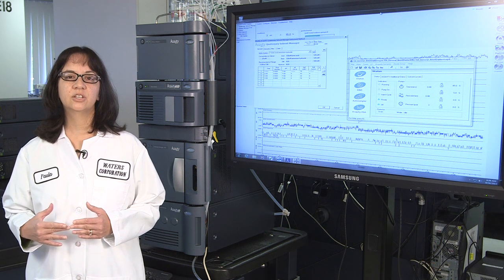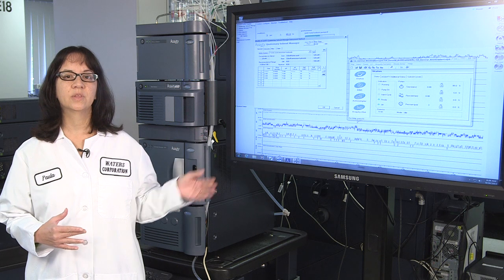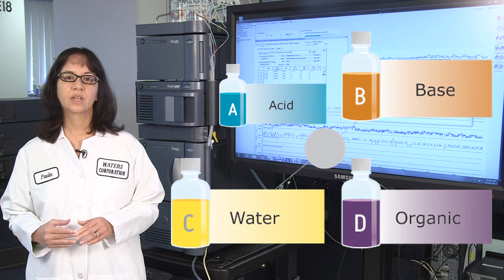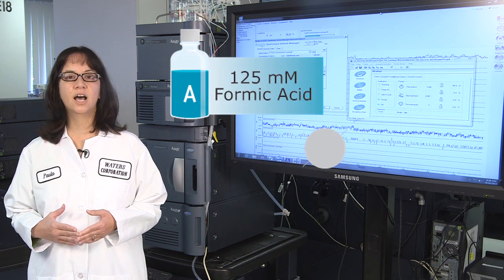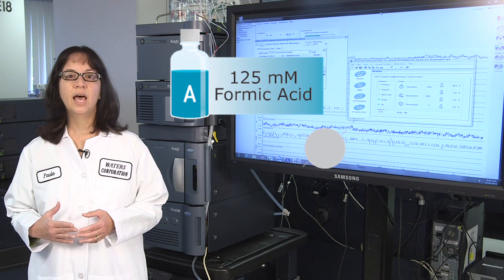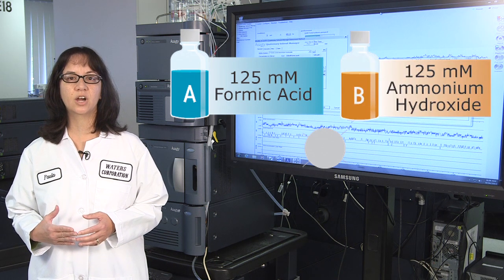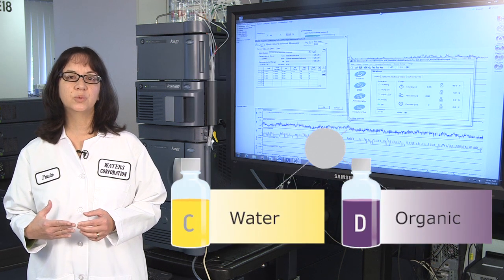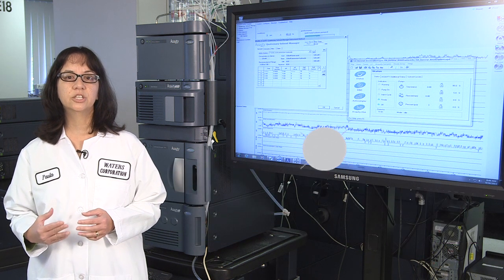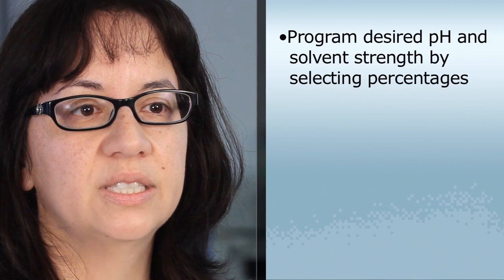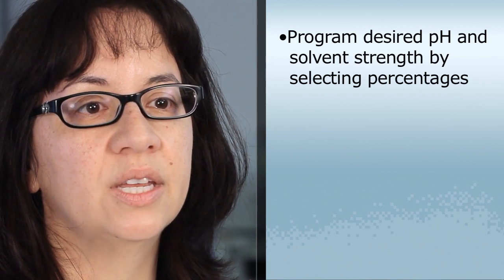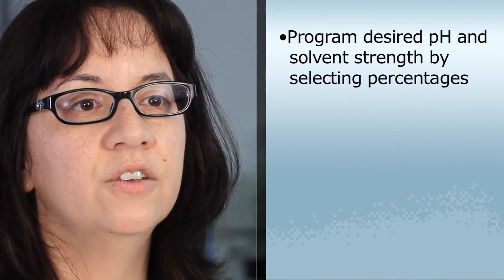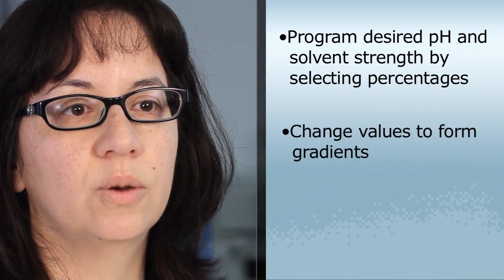To accomplish this, first we configure the instrument like this one. The four solvent reservoirs are used to control both the pH and solvent strength. Reservoir A contains 125 millimolar formic acid and B is 125 millimolar ammonium hydroxide — the pair is used to control pH. Reservoir C and D are used for water and organic solvent, respectively, to control solvent strength. We can program the desired pH and solvent strength into the method by selecting the required percentages of A, B, C and D, and the values can be changed as a function of time to form the gradients. A sequence of different methods can be used to screen alternative values of mobile phase pH.